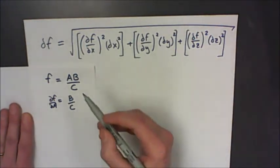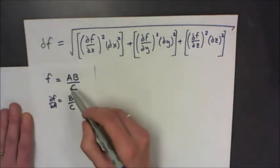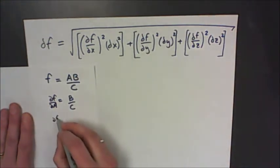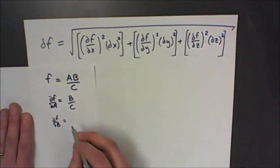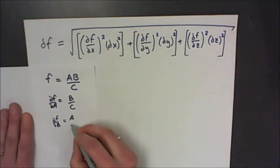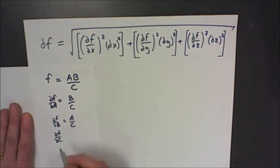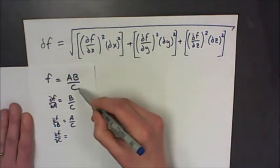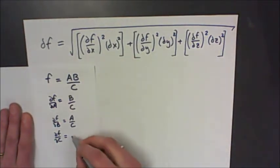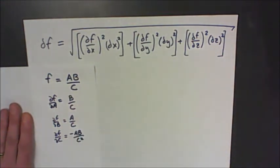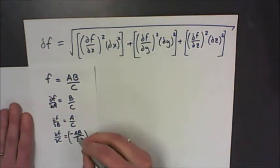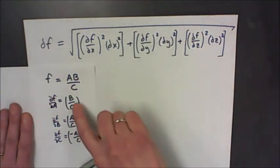Now I'm going to do that again, but treat b as the variable and a and c as constants. The derivative of f with respect to b gives me a over c times one, because the derivative of b is just one. Then I do it again for c. The partial derivative of f with respect to c: since it's c to the negative one, treating a and b as constants gives me negative ab over c squared. So these three are my partial derivatives.